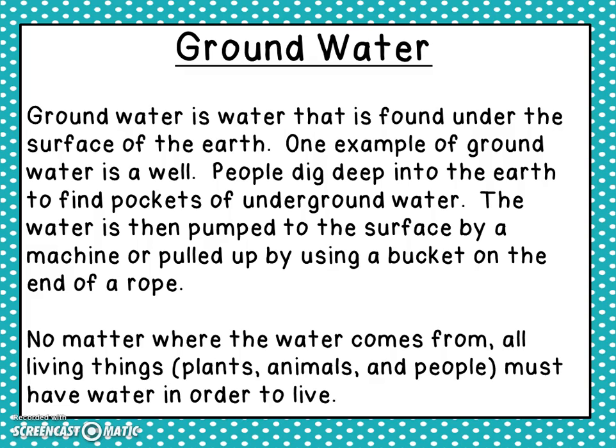Groundwater is water that is found under the surface of the earth. One example of groundwater is a well — people dig deep into the earth to find pockets of underground water. The water is then pumped to the surface by a machine or pulled up using a bucket on the end of a rope. No matter where the water comes from, all living things — plants, animals, and people — must have water in order to live.